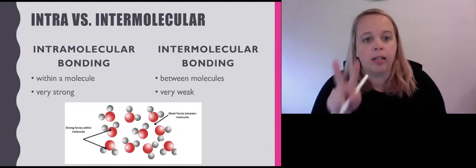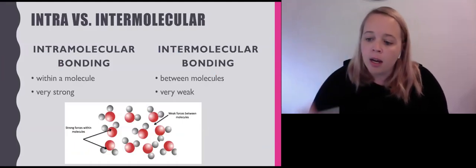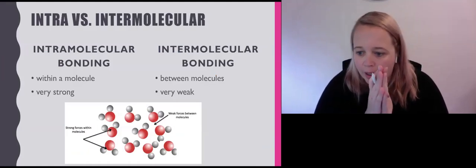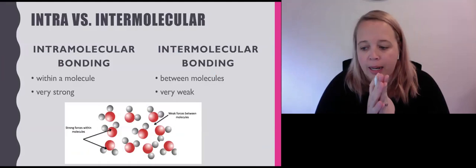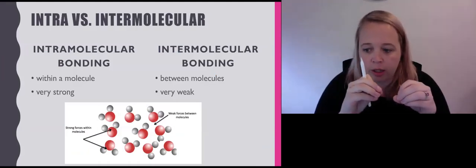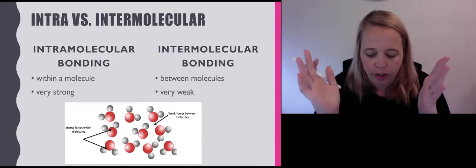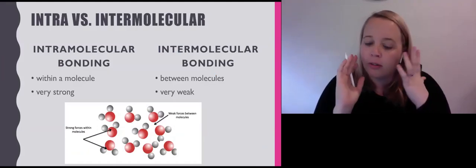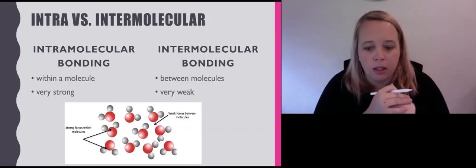Now we're on the second page of the covalent notes. Covalent molecular substances are made up of lots of small molecules being attracted to each other. That's our first sentence there.